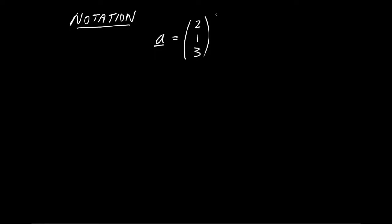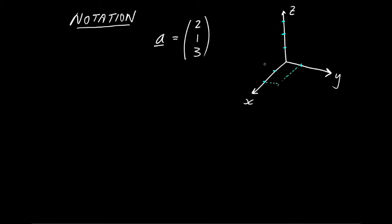If you haven't seen a vector specified before, think of the Cartesian axes — the x, y, z axes. Think in this case about coming out from the origin 2 in the direction of x, 1 in the direction of y, and 3 in the direction of z. We're going to think of our vector as an arrow that comes from the origin to this point in space, and that direction and length of arrow is our visualization of the vector.